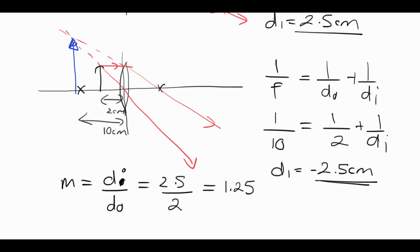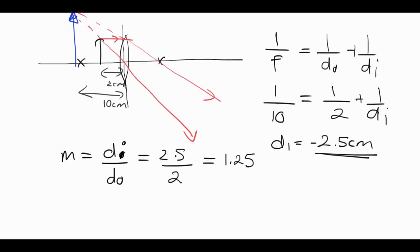And for a convex mirror, you use a negative focal length. So it's kind of the opposite for both types. And that pretty much covers mirrors and lenses at level 2 physics.